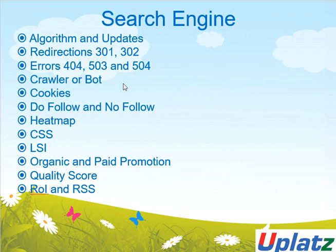LSI is really very important and you have to know it, because it tells Google the meaning of the combination of words. Organic and paid promotion, quality score, ROI, and RSS are very important. Organic means there is nothing written before the SERP result. Paid is with the ad. Quality score comes under paid promotion — whether the ad is of quality or not. ROI is return on investment. RSS is Really Simple Syndication — a very good term.